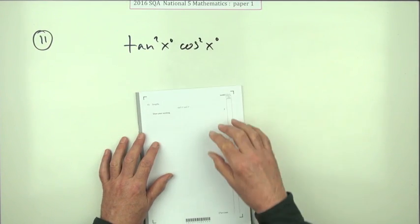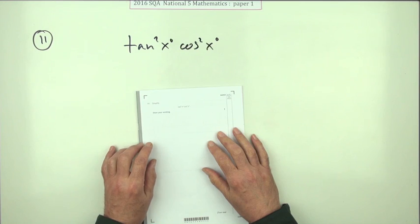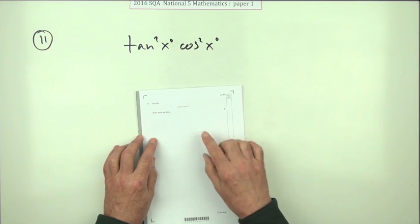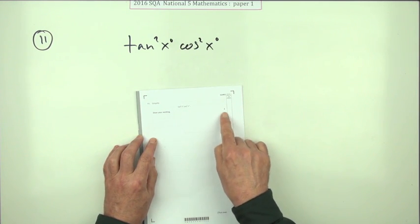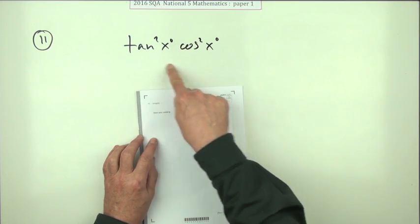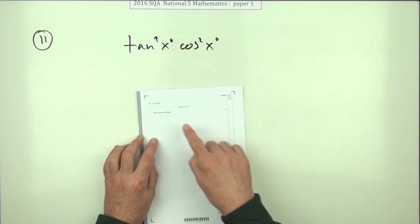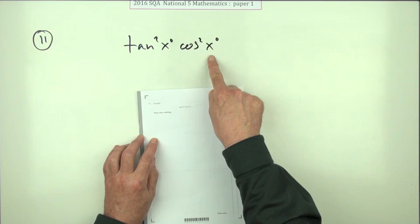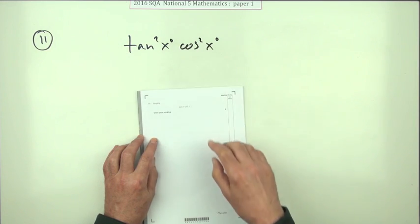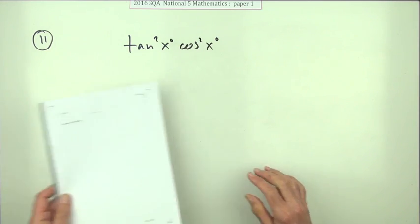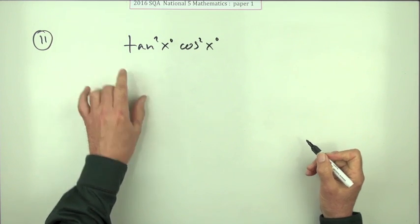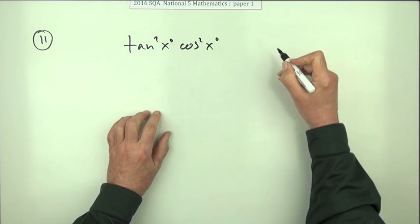Number 11 from Paper 1 of the 2016 National 5 Maths exam. Here we go — two marks, no calculations. It simply says: simplify this. When you see this, you know you'd be using the identities.